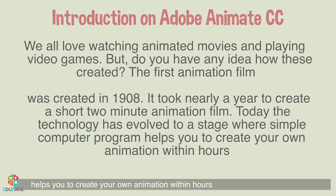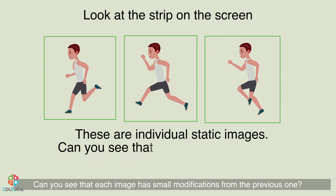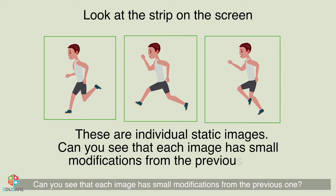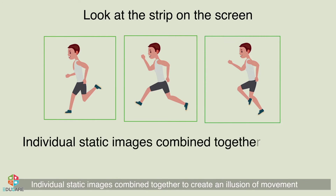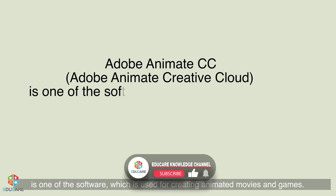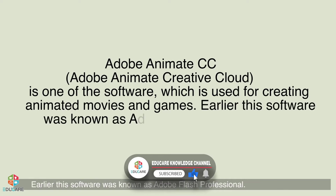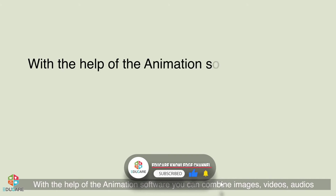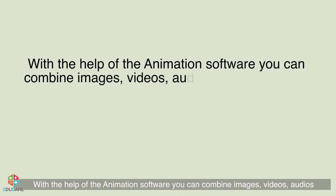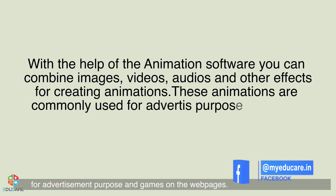Look at the strip on the screen. These are individual static images. You can see that each image has small modifications from the previous one. Individual static images combined together to create an illusion of movement is called animation. Adobe Animate CC — that is, Adobe Animate Creative Cloud — is one of the softwares used for creating animated movies and games. Earlier this software was known as Adobe Flash Professional.